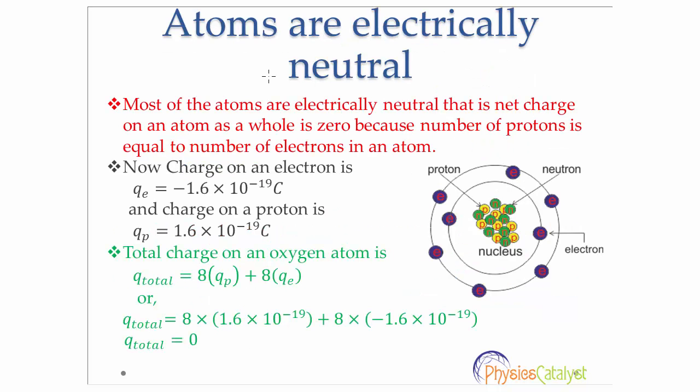Most atoms are electrically neutral, meaning the net charge on an atom as a whole is zero. This happens because in an atom, the number of protons is equal to the number of electrons, and the amount of charge on the proton is exactly equal and opposite in nature to the charge on an electron. The charge on an electron is minus 1.6 × 10^-19 coulombs, and the charge on a proton is 1.6 × 10^-19 coulombs.